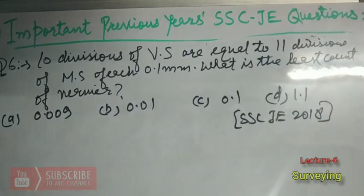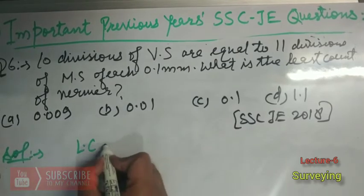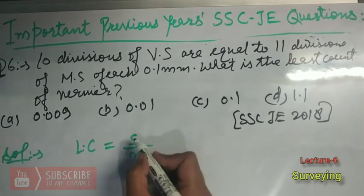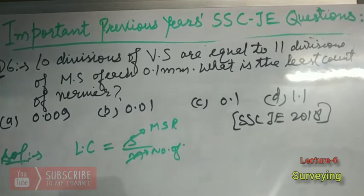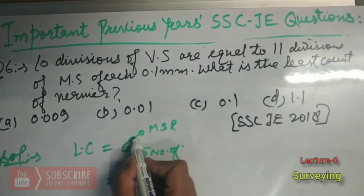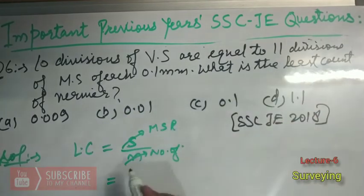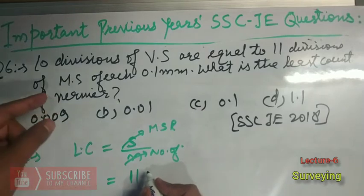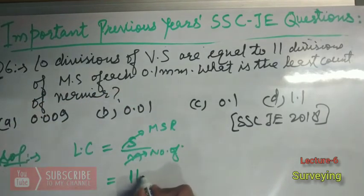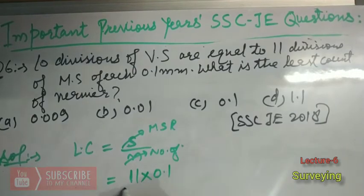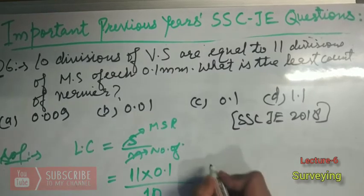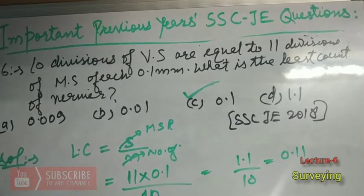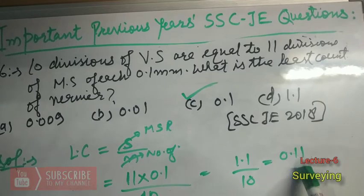We know the formula for the least count of a Vernier scale: Least Count = S divided by N, where S is the main scale reading and N is the number of divisions on the Vernier scale. For S, we multiply 11 divisions by 0.1 mm to get 1.1 mm. N is 10. So the least count is 1.1 divided by 10, which equals 0.11 mm. So option C is correct.